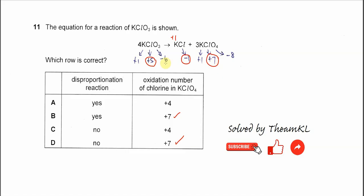So the chlorine after reaction is being reduced and oxidized because the oxidation number decreased and increased. This is a disproportionation reaction. So the answer is B. That's all, thank you.